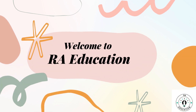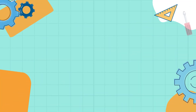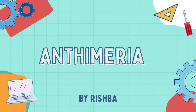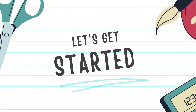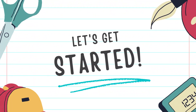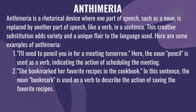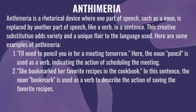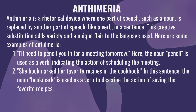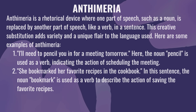Let's talk about Anthimeria. Anthimeria is a rhetorical device where one part of speech, such as a noun, is replaced by another part of speech, like a verb, in a sentence. Sometimes there are nouns that you cannot use as verbs, but in some exceptional sentences you can see a noun replaced by a verb.